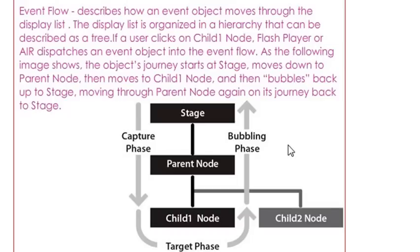Let's talk about the event flow in Flash Builder. This describes how an event object moves through the display list. The display list is organized in a hierarchy that can be described as a tree. There's three parts of this event flow: the capture phase, the target phase, and the bubbling phase. For example, a user will click on a child node in the DOM, and you'll start from the stage of capture mode, which will capture that target and then bubble back up to the stage. You hear about bubbling all the time. It's not complex. This is how it is.